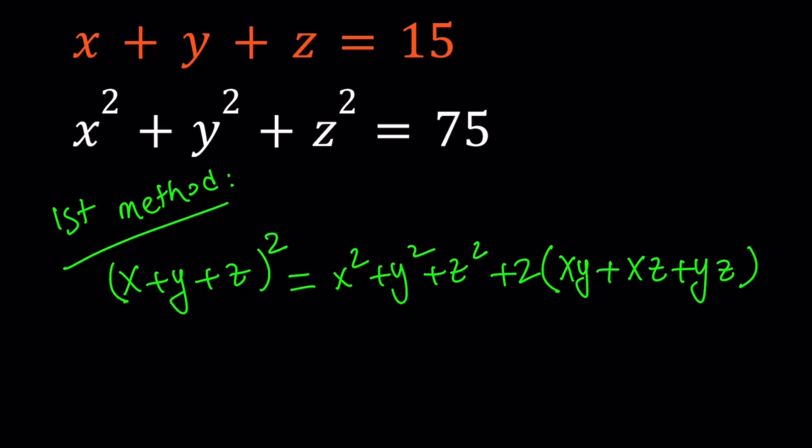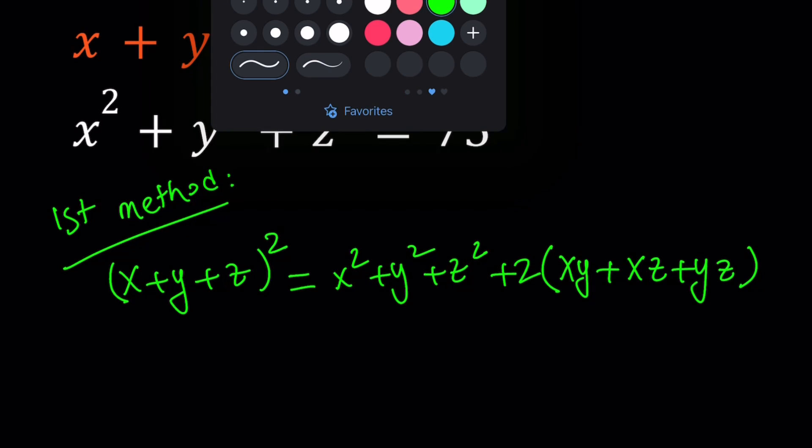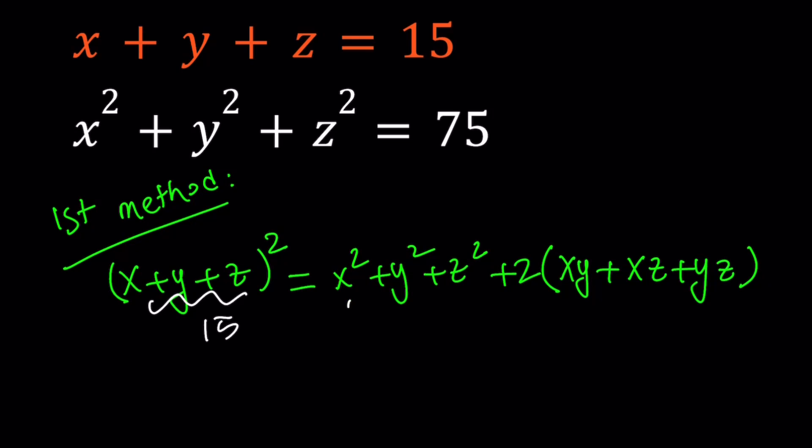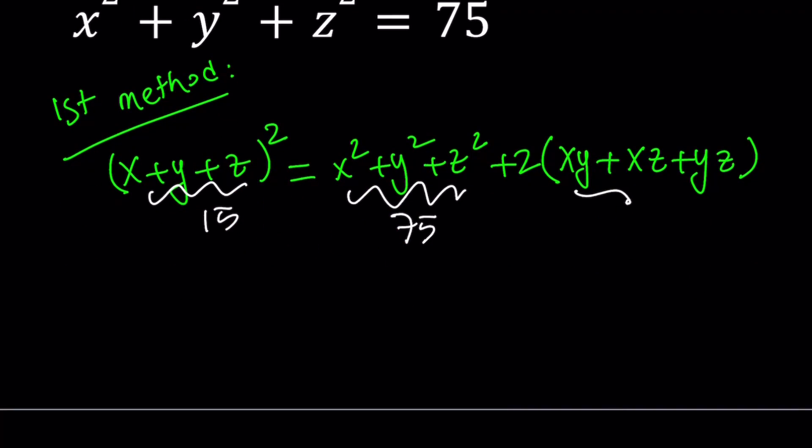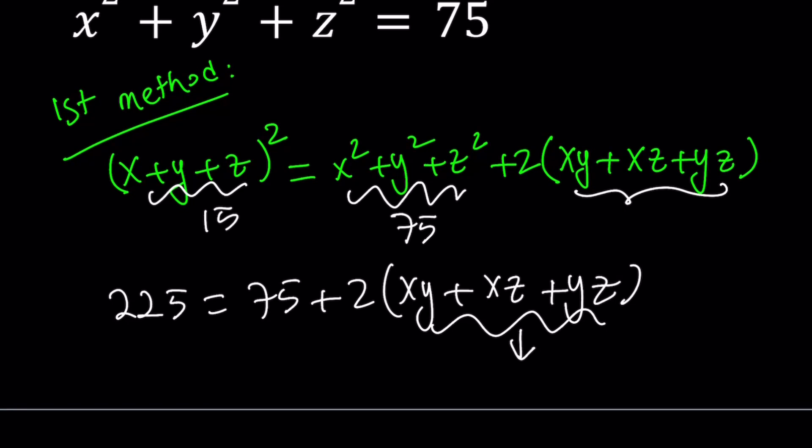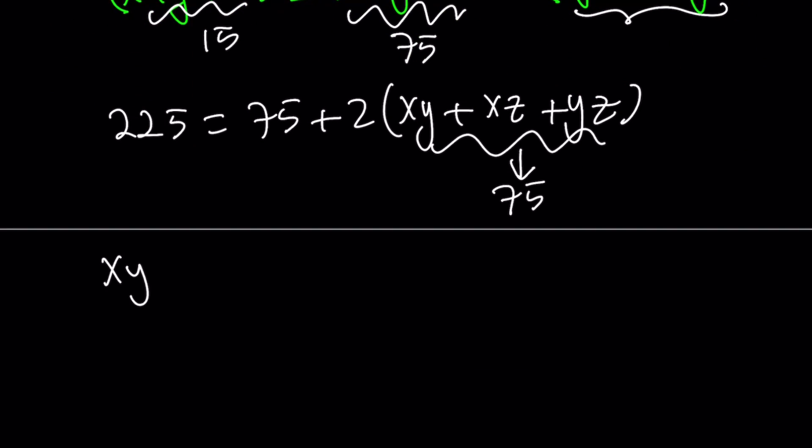So this is an identity. Now, this is good because we do know x plus y plus z, that is 15. We also know their sum of squares, which is 75. Now let's go ahead and square 15. From here, we're basically going to find the two-way sums, xy plus xz plus yz. So if you square 15, you get 225, and that equals 75 plus 2 times xy plus xz plus yz. If you subtract 75, you get 150, and if you divide by 2, you get 75.